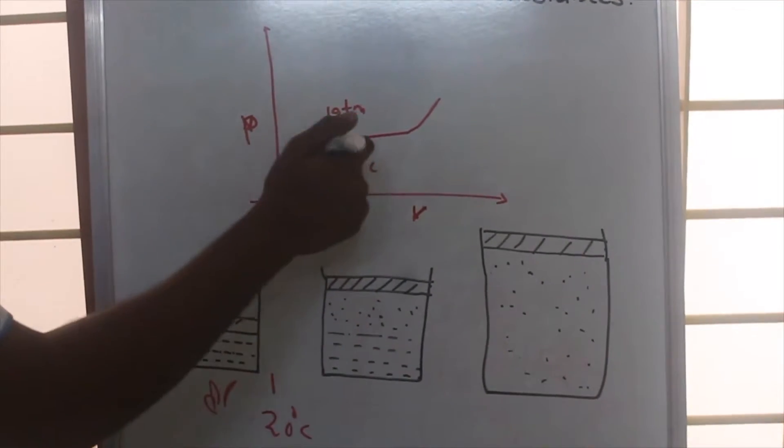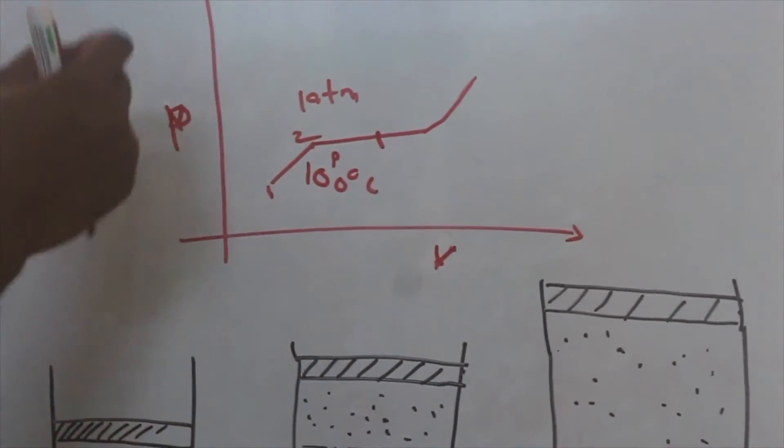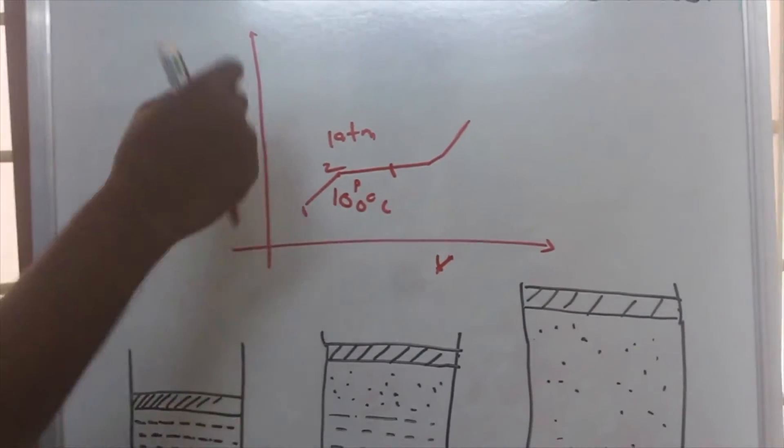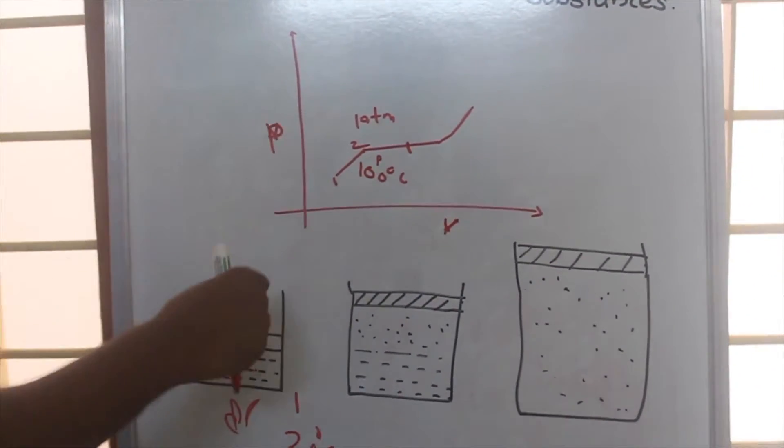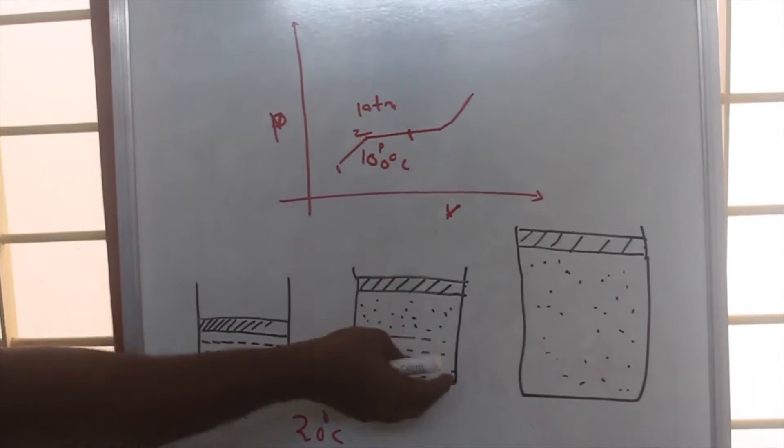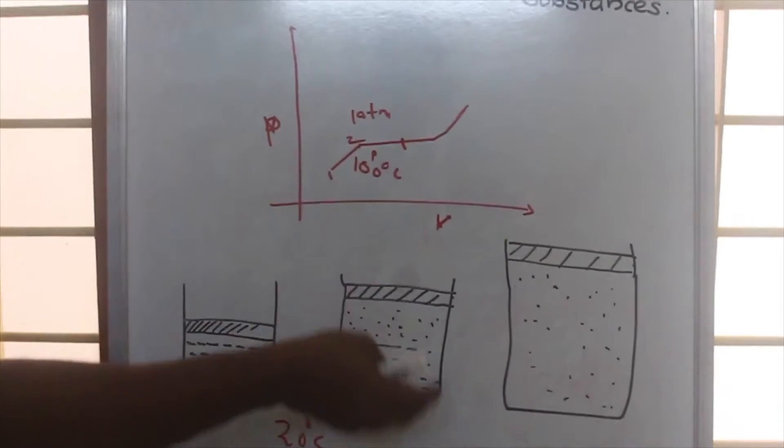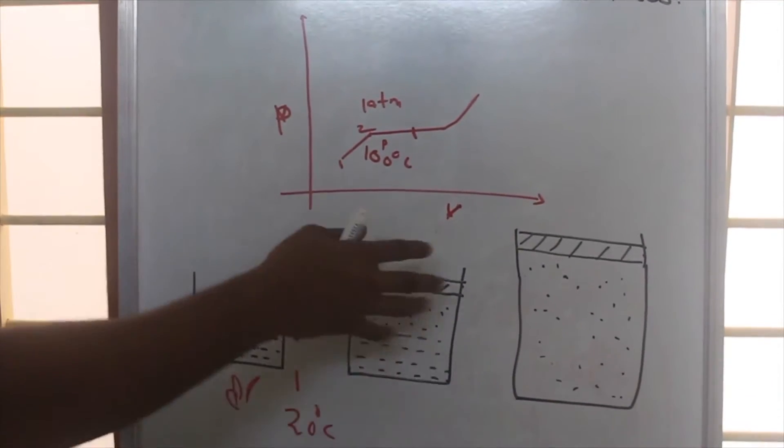At a particular state, suppose here, the pressure will be constant at one atmosphere. The temperature will also be constant at 100 degrees Celsius, but some of the water will be changing into vapor. So there will be a water-vapor interface formed.